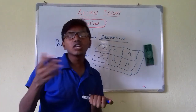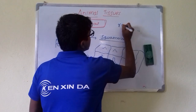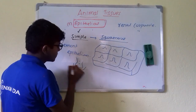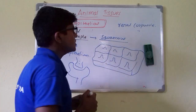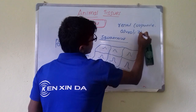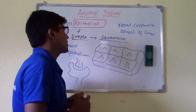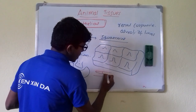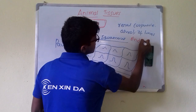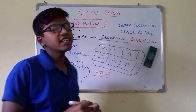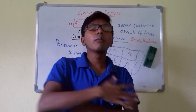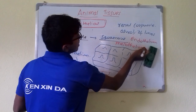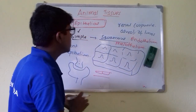Simple squamous epithelium is present in the renal corpuscle — specifically in the glomerular capillaries — and in the alveoli of the lungs, where diffusion of materials between blood and air takes place. It also lines capillary walls, where it is known as endothelium. It also lines peritoneal and visceral body organs, where it is known as mesothelium.